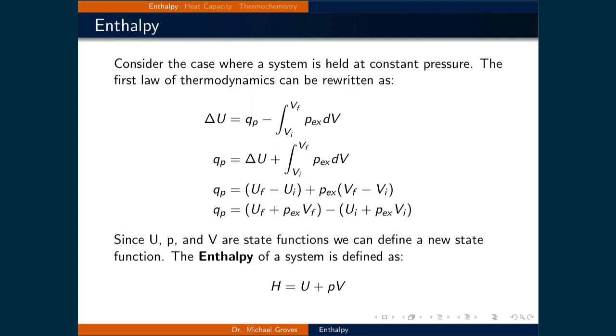The first line simply has the first law of thermodynamics written with heat at constant pressure and work at constant pressure. Rearranging this expression so that the heat at constant pressure is on one side and the change in internal energy and work are on the other side of the equation. Evaluating the work integral and then arranging initial and final terms together gives the heat at constant pressure is equal to the final internal energy plus P external times the final volume minus the internal energy at the initial state plus the external pressure times the initial volume.